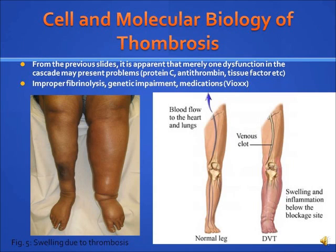Based on the previous slide, it is clear that merely one dysfunction in the cascade may present problems. Improper fibrinolysis, genetic impairment, and medications can cause improper blood clotting. The picture on the right shows a deep vein thrombosis above the knee. The deep vein thrombosis prevents blood flow to the upper portion of the leg, leading to swelling and inflammation below the blockage site.